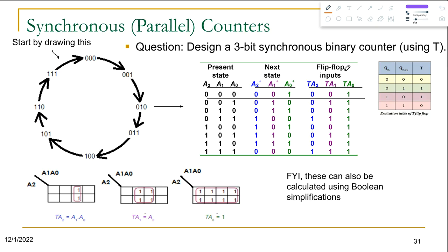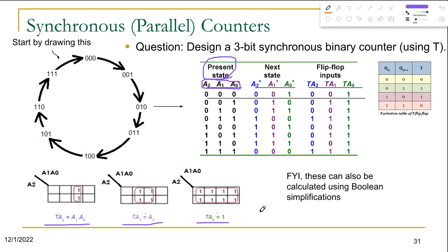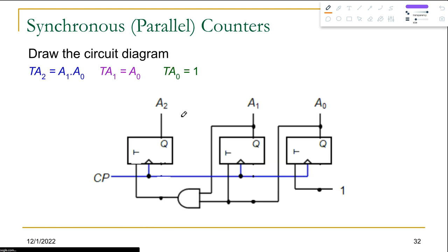Once all flip-flop input columns are filled, we build K-maps — one for each of the three flip-flop input columns: TA2, TA1, and TA0. The inputs to the K-maps are the three present state variables: A2, A1, and A0. We place the ones, do the groupings, and find the boolean functions. Once we get those equations, we can build the complete circuit, just as with the two-bit synchronous counter.